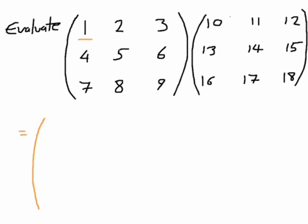I'm going to start with 1 times 10, and I'm going to write this out. Now I'm going to read across this line and down this line. So it's going to be 1 times 10 plus 2 times 13 plus 3 times 16. If you quickly type that in your calculator, I've got the answer 84.